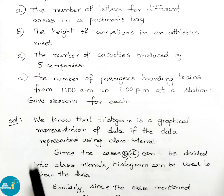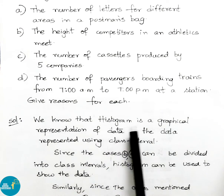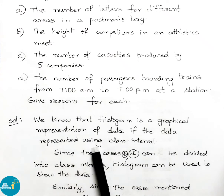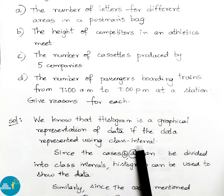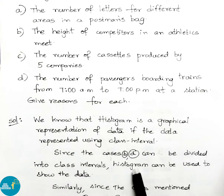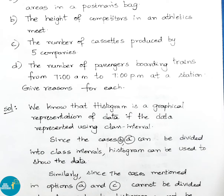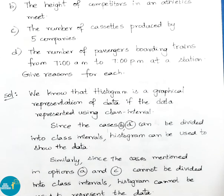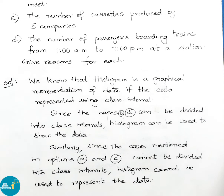Let us see the solution. We know that a histogram is a graphical representation of data when the data are represented using class intervals. Since cases B and D can be divided into class intervals, histogram can be used to show the data. Since cases A and C cannot be divided into class intervals, histogram cannot be used to represent the data.